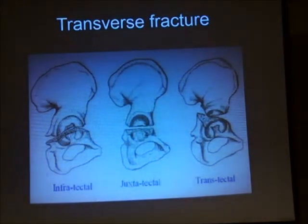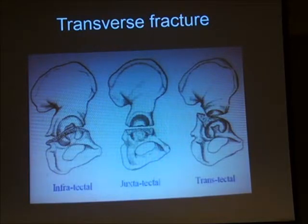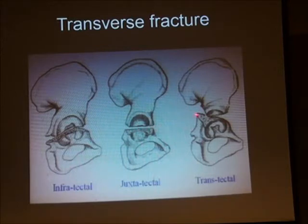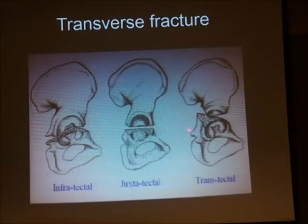Transverse fractures can be subdivided into three subtypes: infratectal, juxtatectal, and transtectal. These descriptions relate to the cotyloid fossa — the notch — and the articular surface. Infratectal are below it, juxtatectal are at the level of it, and transtectal go through the joint and the weight-bearing part. These are really critical to get right because these fractures go through the weight-bearing part of the dome and acetabulum.